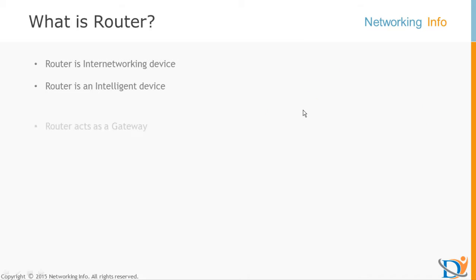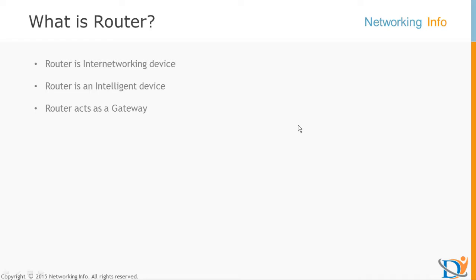Something else I would like to talk about is that the router acts as a gateway. A gateway is important when you want to send traffic out of your network — then you require a gateway. Otherwise you don't require a gateway.